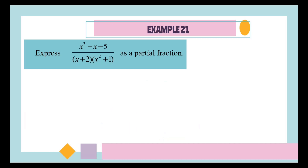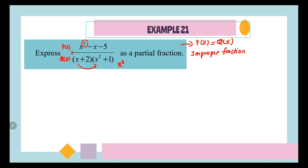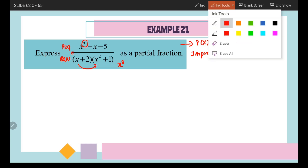Now let's look at example 21. Before we start any question, we have to recognize whether it is proper or improper. Notice that the power at the numerator is 3 and the power at the denominator is also 3. So the power of P(x) equals the power of Q(x) — the powers are the same. Since the power is the same, we recognize this as an improper fraction, and we need to start this question with long division.